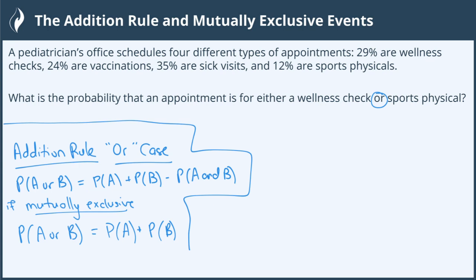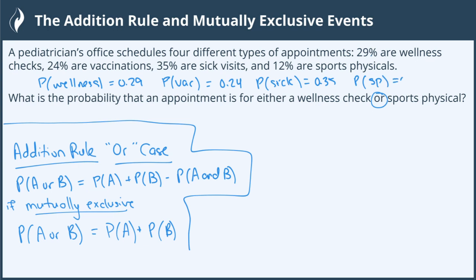A pediatrician's office schedules four different types of appointments: 29% are wellness visits, so P(wellness) = 0.29; 24% are vaccinations, so P(vac) = 0.24; 36% are sick visits, so P(sick) = 0.35; and 12% are sports physicals — I'll write SP for sports physical.